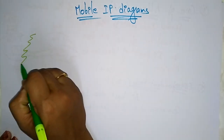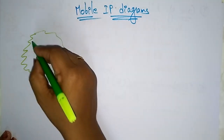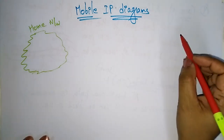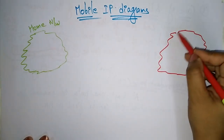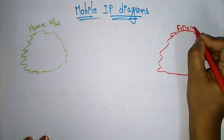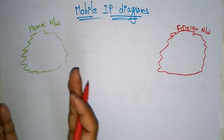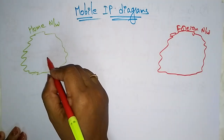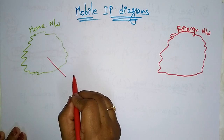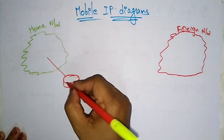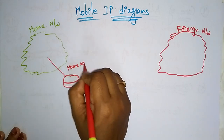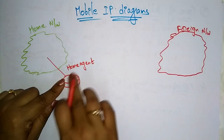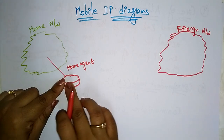Let me explain with the diagram. First, let's take this as a home network, and somewhere else we are having the foreign network. Starting position, your mobile node is at your home. In your home you have one router — that router you call the home agent. Your home network will be connected to this home agent, which will register your mobile node.